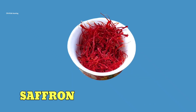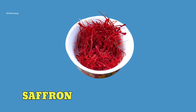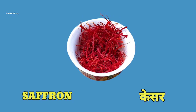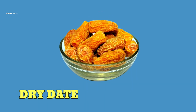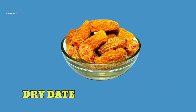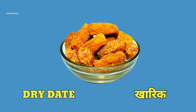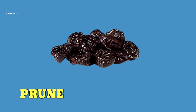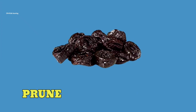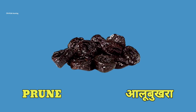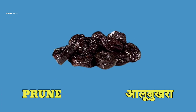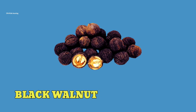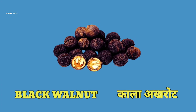Saffron — saffron means keshar. Dry date — dry date means khari. Black walnut — black walnut means kala akroor.